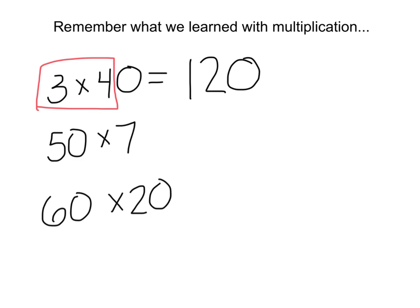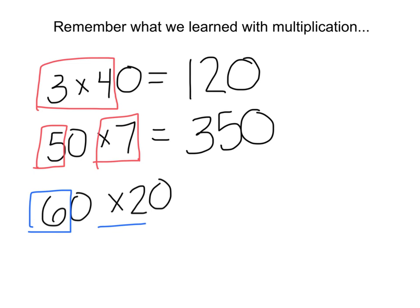We use that same strategy to solve 50 × 7 using the basic fact of 5 × 7. In this case, 5 × 7 was 35, and since 50 is 5 tens, we added the zero to get 350. We brought that strategy into two-digit multiplication and looked for the basic fact to solve problems like 60 × 20 by finding 6 × 2. Since 6 × 2 is 12, but 60 is 6 tens and 20 is 2 tens giving us two zeros, the answer was 1,200.